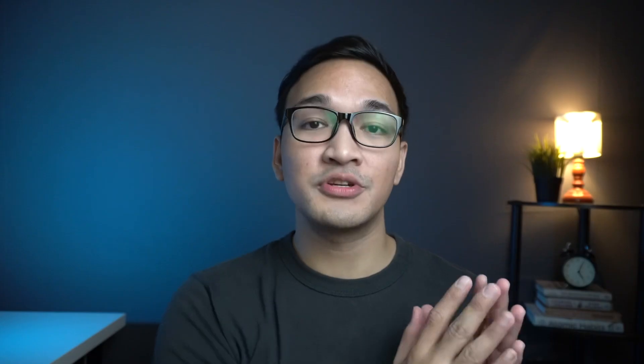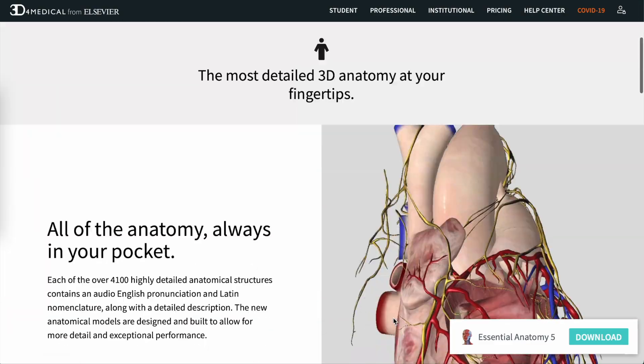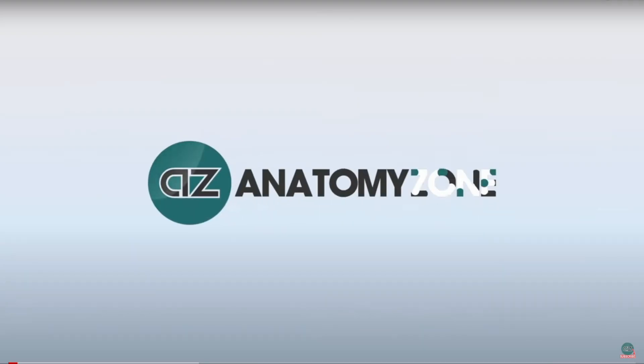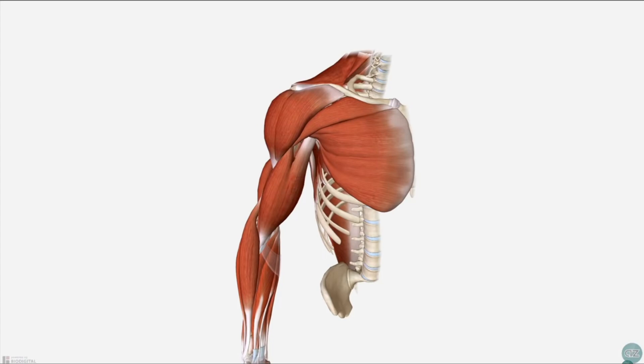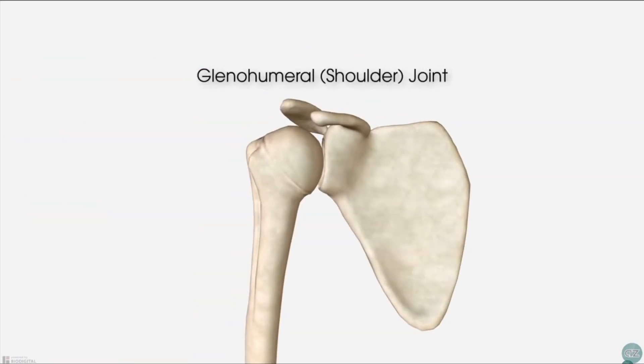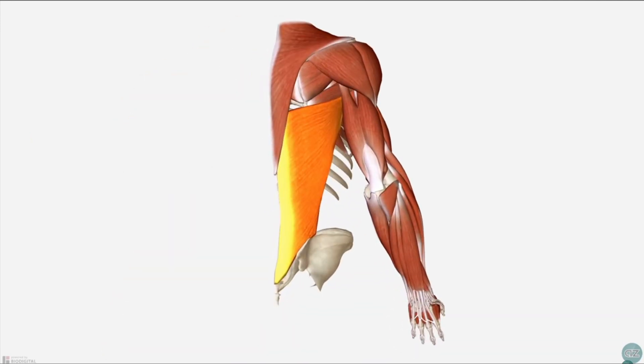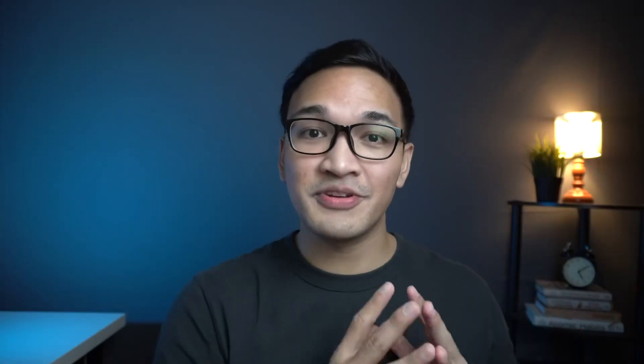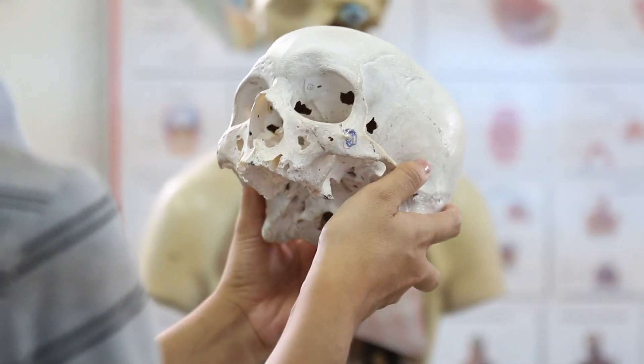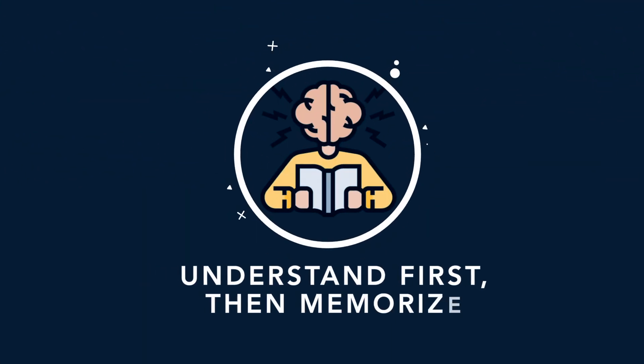Some students don't like studying anatomy in a two-dimensional way using books. You can use 3D anatomy apps such as Essential Anatomy, which is a paid app. But if that's too expensive, there are free resources on YouTube such as Anatomy Zone, which has some of the best anatomy videos and is totally free. It shows you how different anatomical structures fit into one another from different planes and perspectives, and helps in visualizing what happens when you add or remove a layer of a particular structure. Also, if your medical school has anatomy cadaver dissections, you should actively participate to get the feel of how structures are oriented to each other physically.